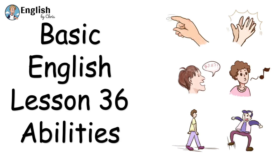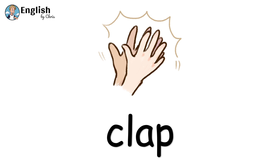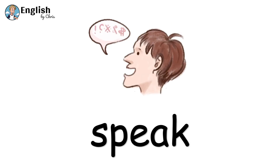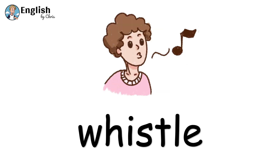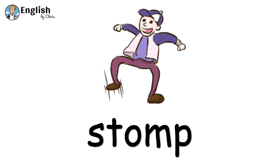Basic English, Lesson 36: Abilities. Touch, Clap, Speak, Whistle, Walk, Stomp.